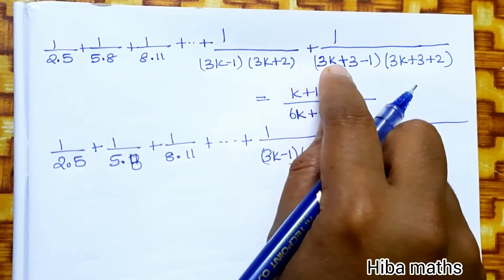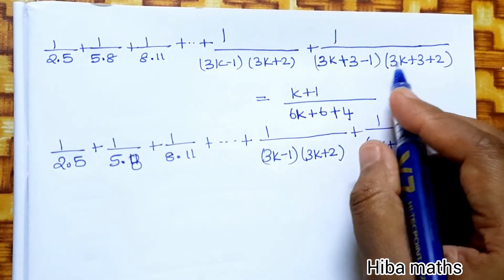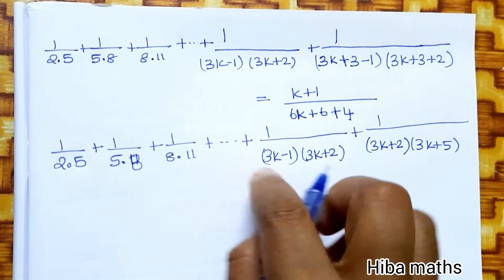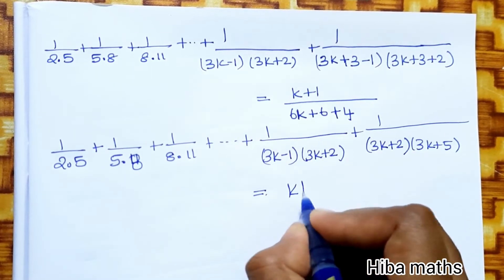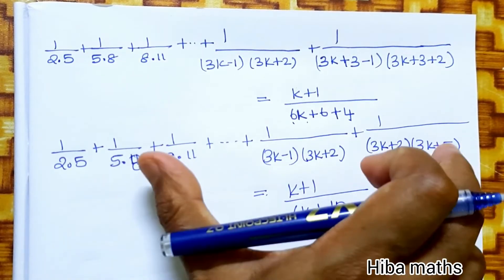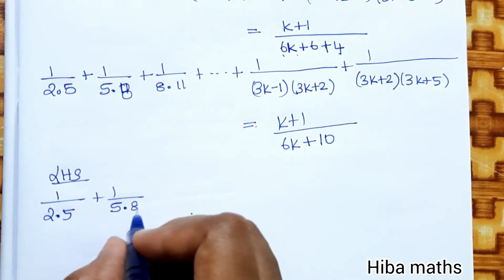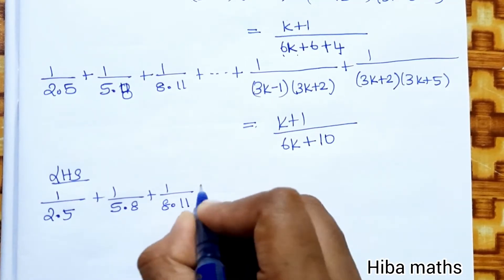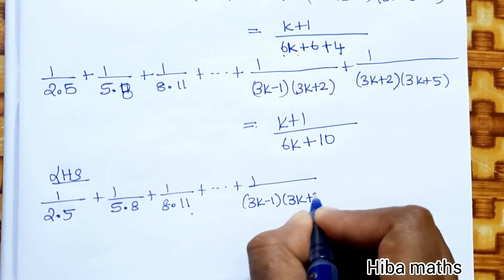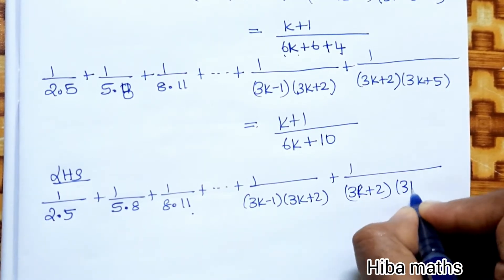Let's solve this. We have 1/(3K+3−1) = 1/(3K+2) and 3K+3+2 = 3K+5. So the LHS equals K/(6K+4) + 1/((3K+2)(3K+5)). The RHS part gives 6K+4 = 10 when simplified. Adding the next term: 1/(2×5) + 1/(5×8) + ... + 1/((3K−1)(3K+2)) + 1/((3K+2)(3K+5)).